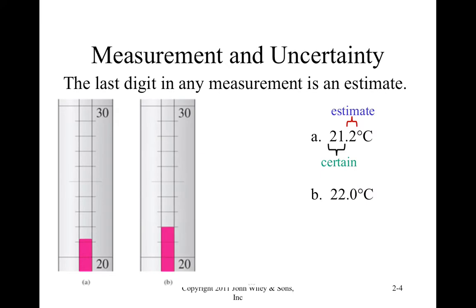With the second thermometer, notice that the level of the alcohol is actually pretty close to the tick mark. So this person that did this measurement, they decided that it was exactly at the tick mark. So they called this measurement 22.0. So even though it's exactly at the tick mark, that last digit is considered an estimate or uncertain.